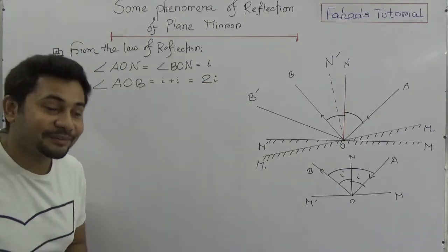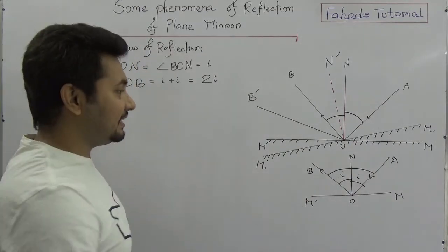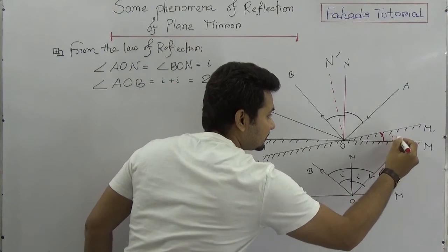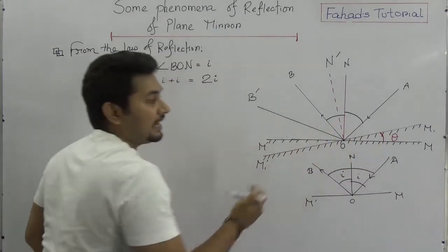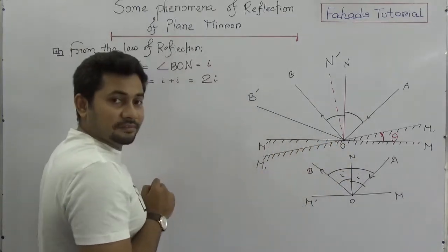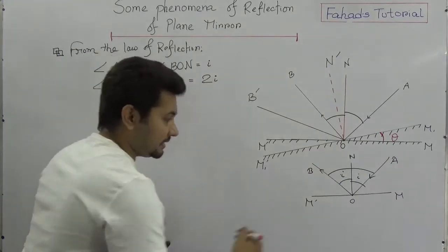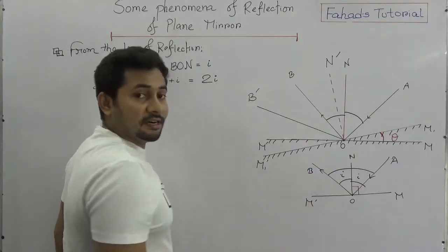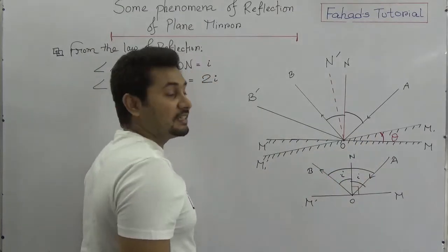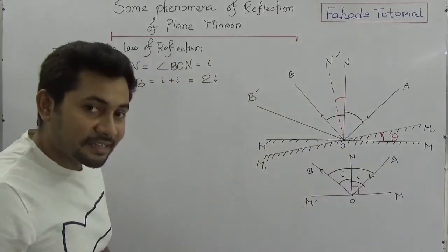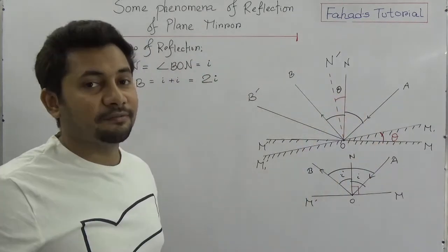Now if we change the plane mirror by an angle, and that angle is suppose theta — it can be 5 degrees, 4 degrees, 2 degrees, whatever — it changes the angle of the mirror about position O. When it was at MM' level, the normal was at 90 degrees. Now you change the position of the mirror, so it will definitely change the position of the normal. If you change by theta, the angle between the old and new mirror will be theta, and the same change of theta will take place in the position of the normal.